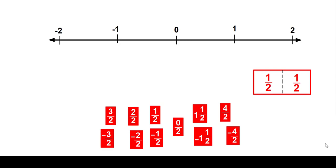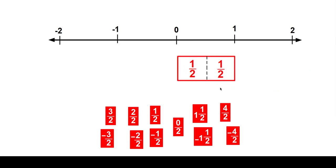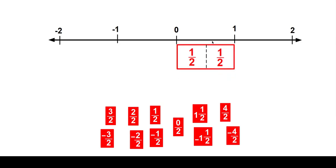If I was given a number line that looked like this and I was told that I needed to put these on the number line somewhere, the first thing I would do is I would look at the denominator of the fractions — and they're all halves. So I would take this number line and I would break it up into halves. This is like a rectangle you used to have to draw in half and label it. It's the same thing with a number line. I'm going to use this to help me figure out how to divide it up.